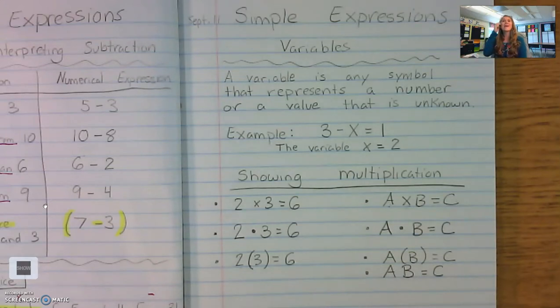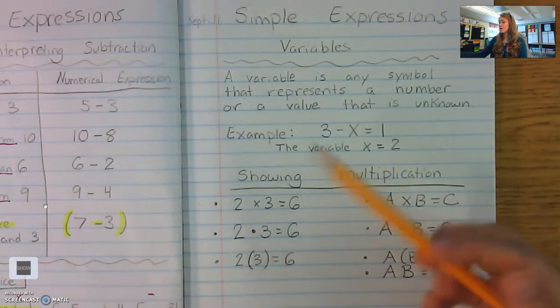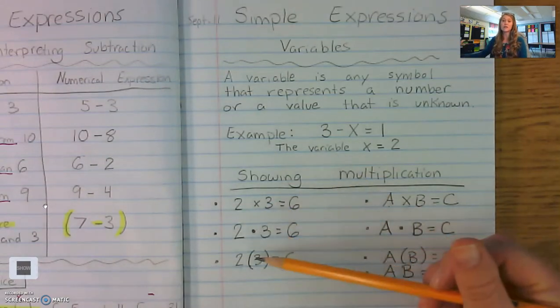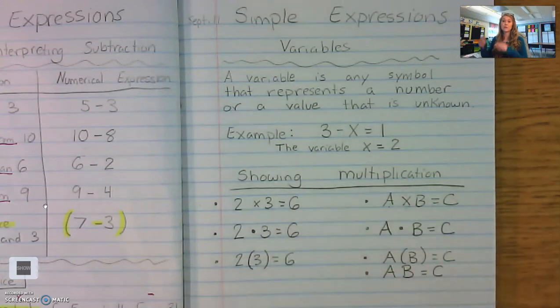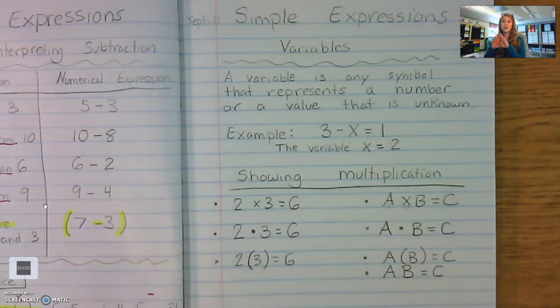Pretty interesting, right? As we get into higher and higher math, mathematicians discovered that multiplication needed to be represented in different ways. So we went from the x to the dot to the parentheses or just two variables next to each other. All of those can represent multiplication. Just a fun little tidbit of knowledge for you. Let's practice looking at some variable equations.